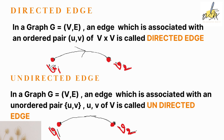What is an undirected edge? In a graph G, an edge which is associated with an unordered pair U comma V — where the vertex names are U and V — is called an undirected edge. Looking at the second diagram, V1 and V2 are the vertices connected by an edge without an arrow mark. That is why this edge represents an undirected edge.